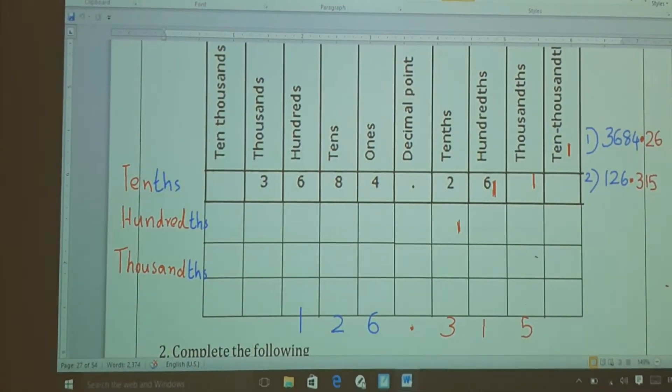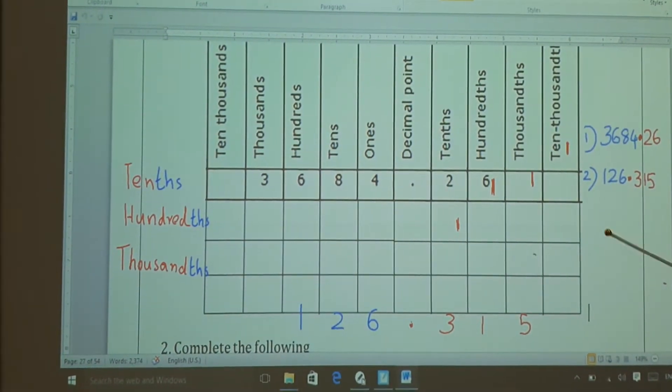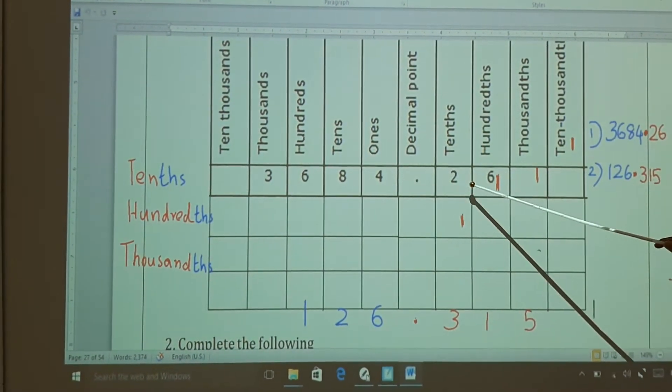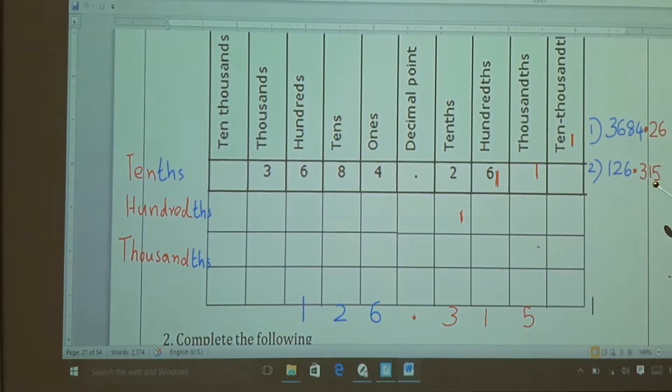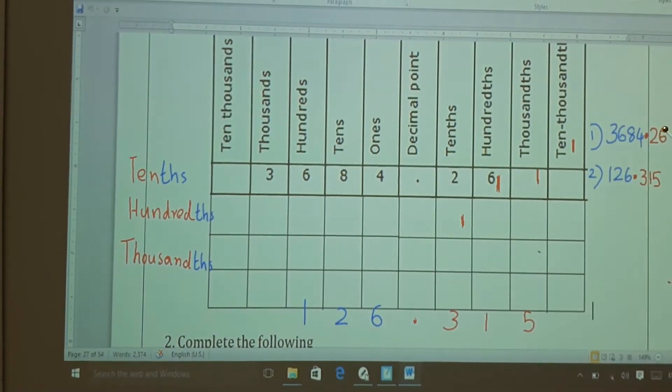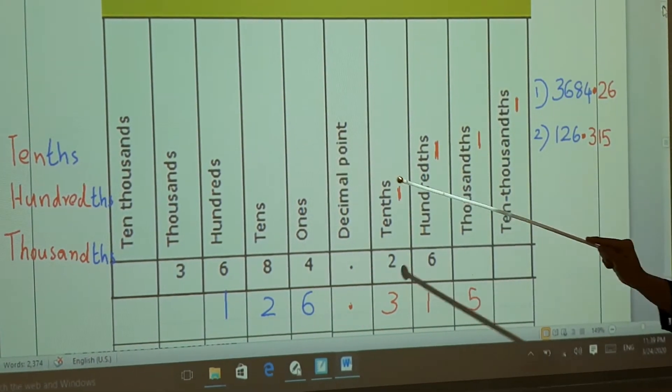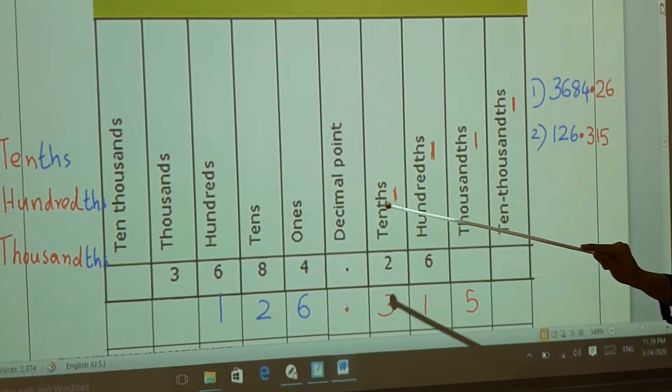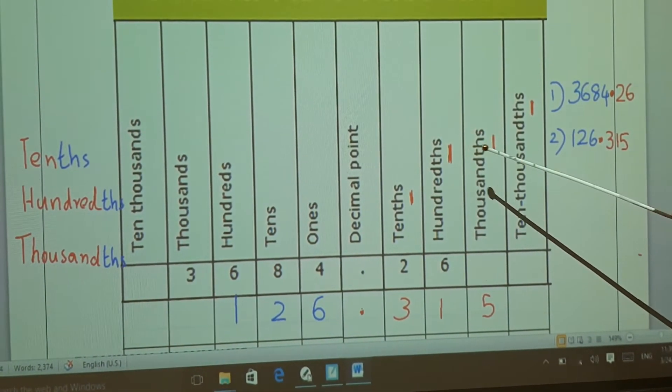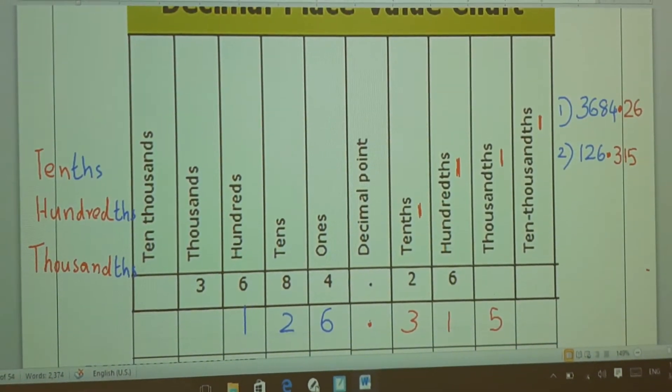Then what about two? It comes in the tenth place. After decimal, it comes two. And in the hundreds place, it comes six. So look here, the only difference is instead of S, here only TH, TH, TH. Everything will come like that.